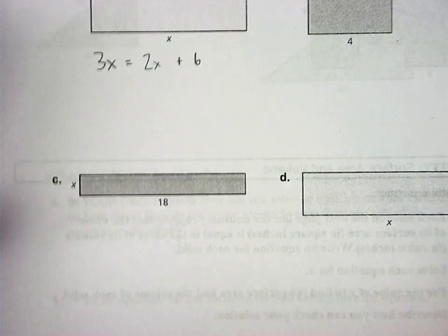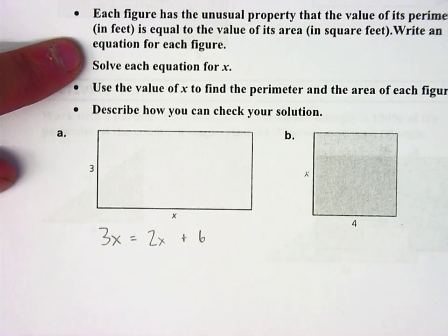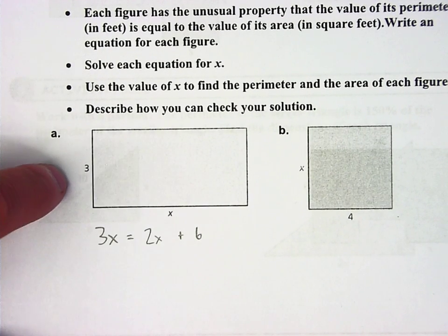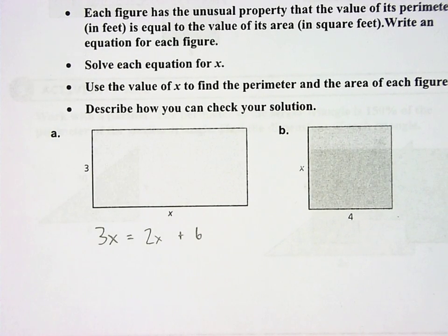All right, so here we're looking at activity 1 in 1.3. Each of these shapes has the unique characteristic that its area is equal to its perimeter.